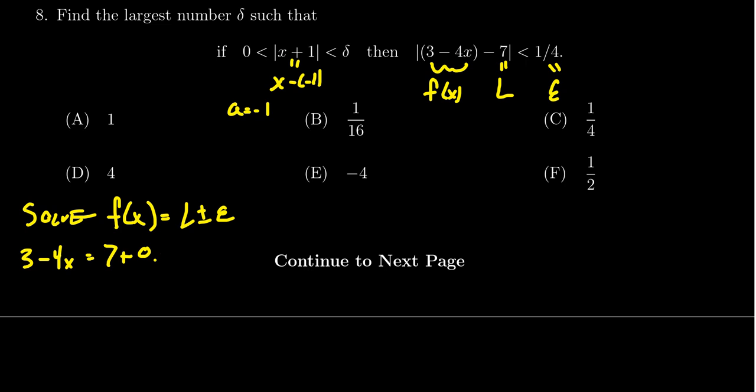So we're going to get 3 - 4x equals, well, with 7 we might write it as 28/4. And so we end up with 29/4.